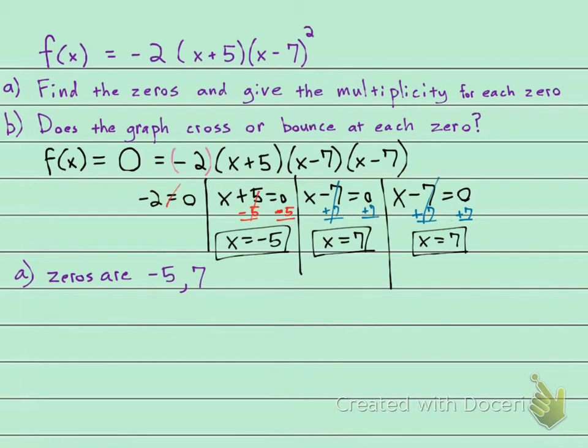The next question they ask is what is the multiplicity for each zero? Well, the multiplicity is going to be how many times that zero shows up. You can find it if you look at the original equation. The multiplicity of 7 is 2, and the multiplicity of negative 5 is 1. So the smaller zero, which is negative 5, is going to have a multiplicity of 1, and the larger zero, 7, is going to have a multiplicity of 2.